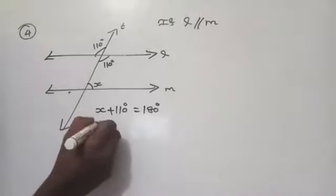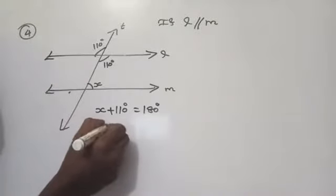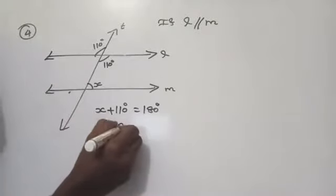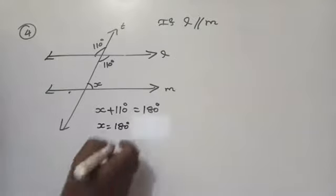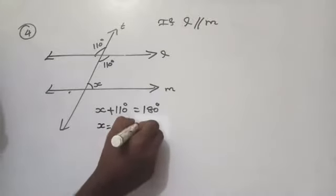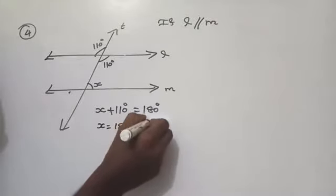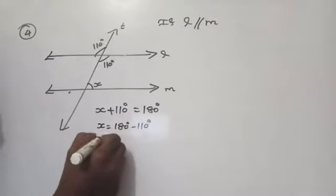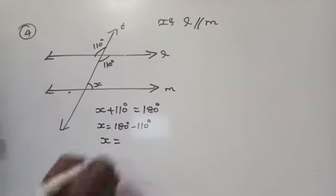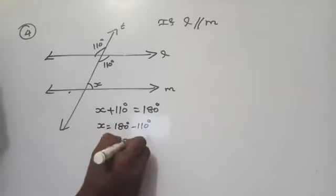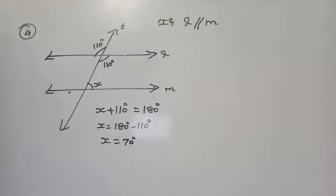Co-interior angles on the same side of the transversal are supplementary. So, x is equal to 180 degrees. Transpose 110 from the left-hand side to the right-hand side — it becomes minus 110 degrees. Then x equals 180 minus 110, which is equal to 70 degrees.